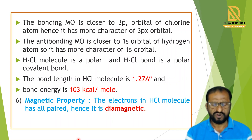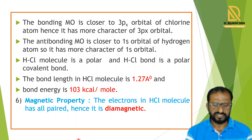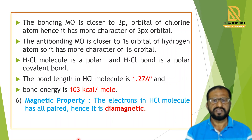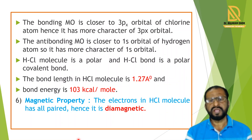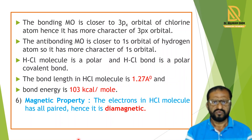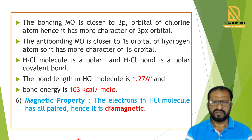The bond length of HCl is 1.27 Ångströms, and the bond energy of HCl is 103 kilocalories per mole. This energy is sufficient to confirm that HCl is a stable molecule. From the molecular orbital diagram, we observe that the two electrons in the bonding molecular orbital are paired, with no unpaired electrons, so HCl shows diamagnetic property.